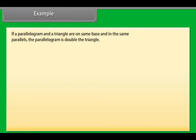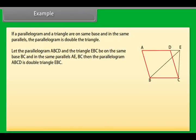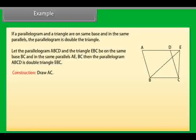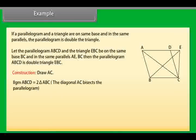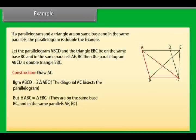Example: If a parallelogram and a triangle are on the same base and between the same parallels, the parallelogram is double the triangle. Let parallelogram ABCD and triangle EBC be on the same base BC and between the same parallels AE and BC. Then parallelogram ABCD is double triangle EBC. Construction: Draw AC. Since AC bisects the parallelogram, parallelogram ABCD is double triangle ABC. But triangle ABC equals triangle EBC because they are on the same base BC and between the same parallels AE and BC. Therefore, parallelogram ABCD is also double triangle EBC.